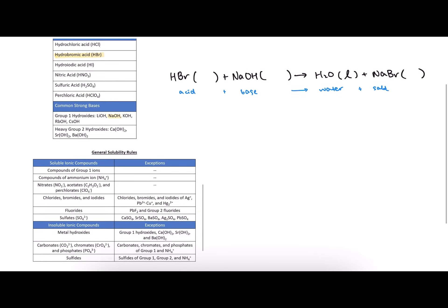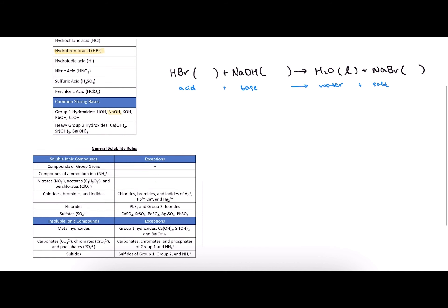So NaBr is a group 1 ion, and it says here that group 1 ion compounds are soluble, so that will be in the aqueous state, which is denoted by AQ.